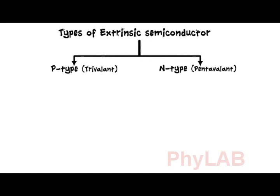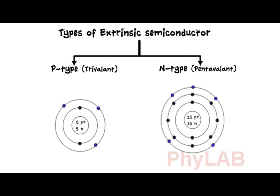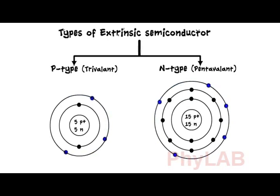Extrinsic semiconductors are subdivided into p-type or trivalent and n-type or pentavalent. As we can see, we have three electrons orbiting in the outermost shell of the atom. It is called trivalent. And in the other atom, we have five electrons orbiting. Hence, it is called pentavalent.